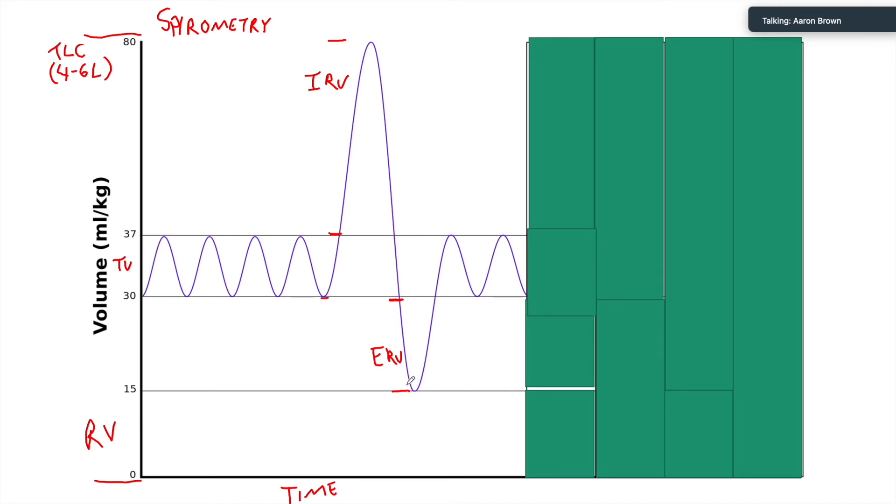So that's covering our five major volumes. We talked about our residual volume. As we go up we have our expiratory reserve, our tidal, our inspiratory reserve, and then the max is our total lung capacity.